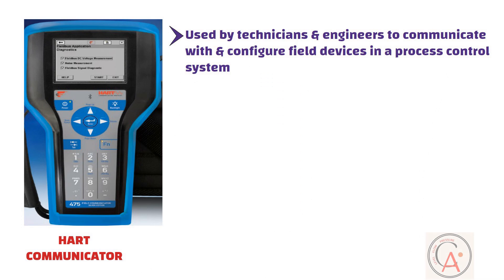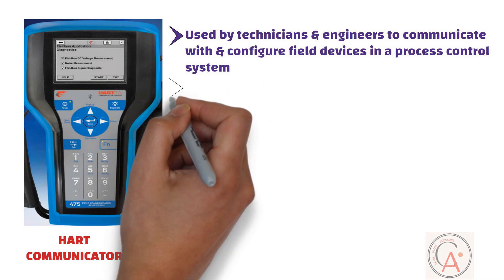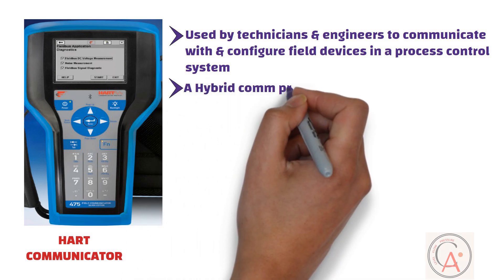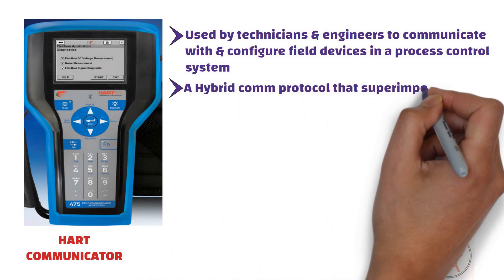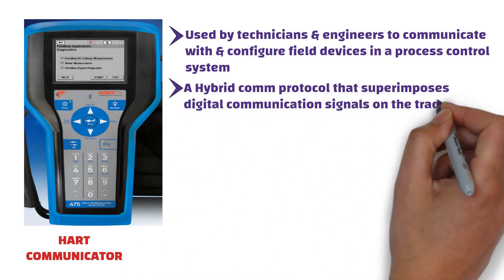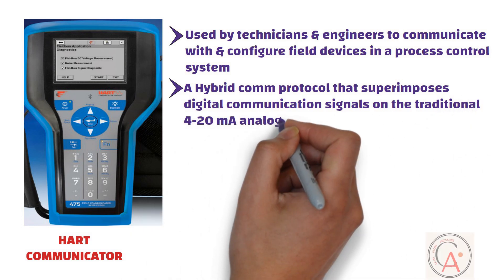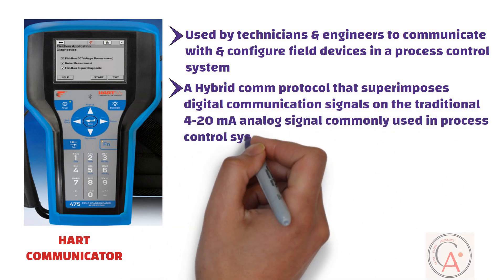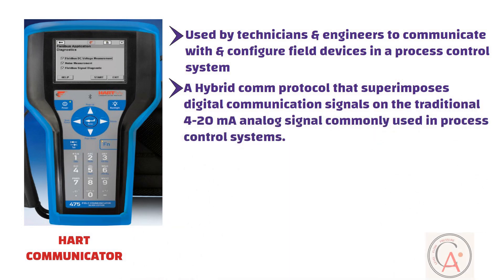Here are some key features and aspects of HART communicators. HART is a hybrid communication protocol that superimposes digital communication signals on the traditional 4 to 20 mA analog signal commonly used in process control systems. This allows for bidirectional communication, enabling digital information exchange between field instruments and control systems.